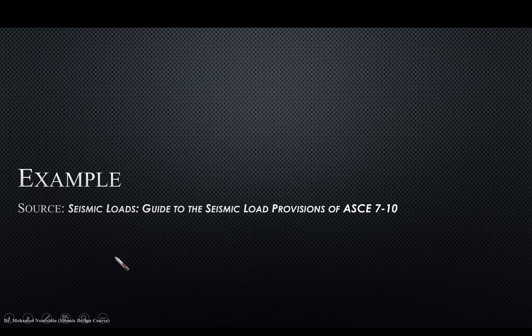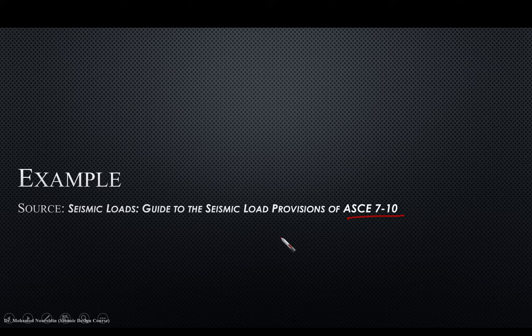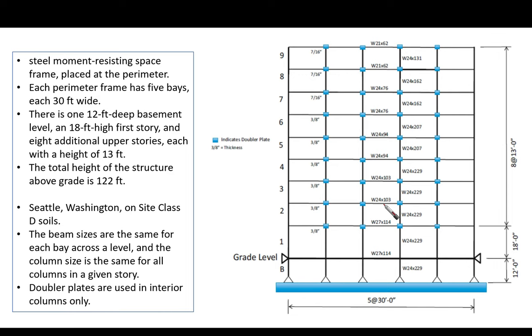Let's go to the example directly. This example is based on the seismic load guide to the seismic load provisions based on ASCE 7-10, but it applies equally to ASCE 7-16. The example is a multi-story steel moment-resisting space frame placed at the perimeter.